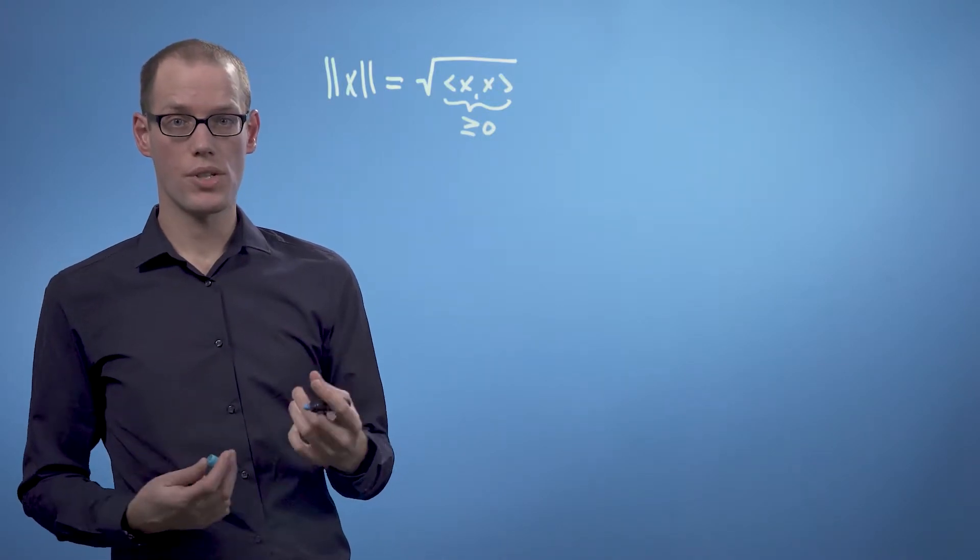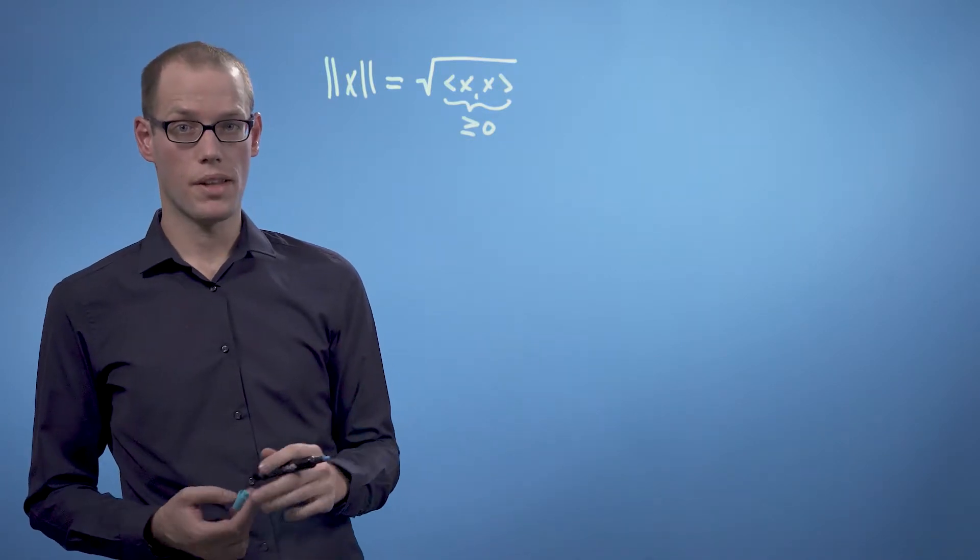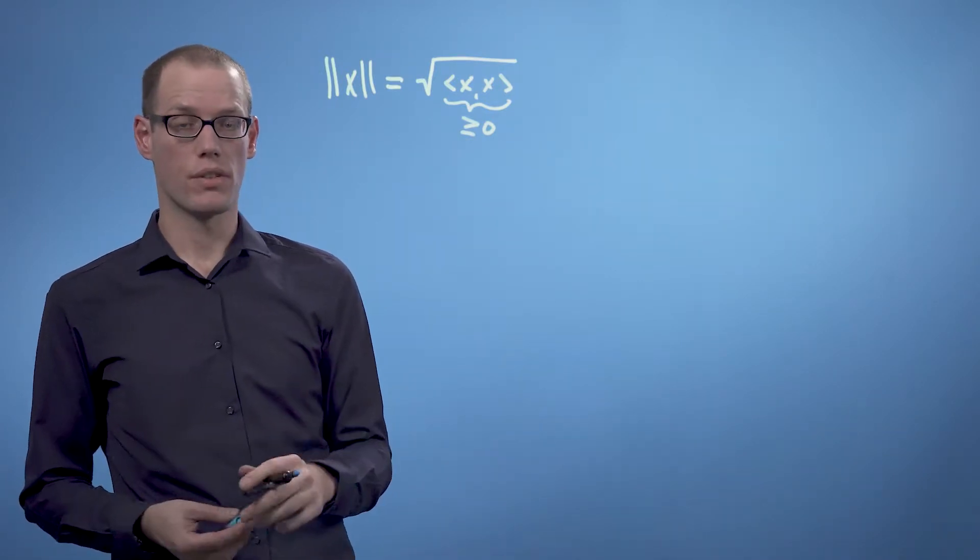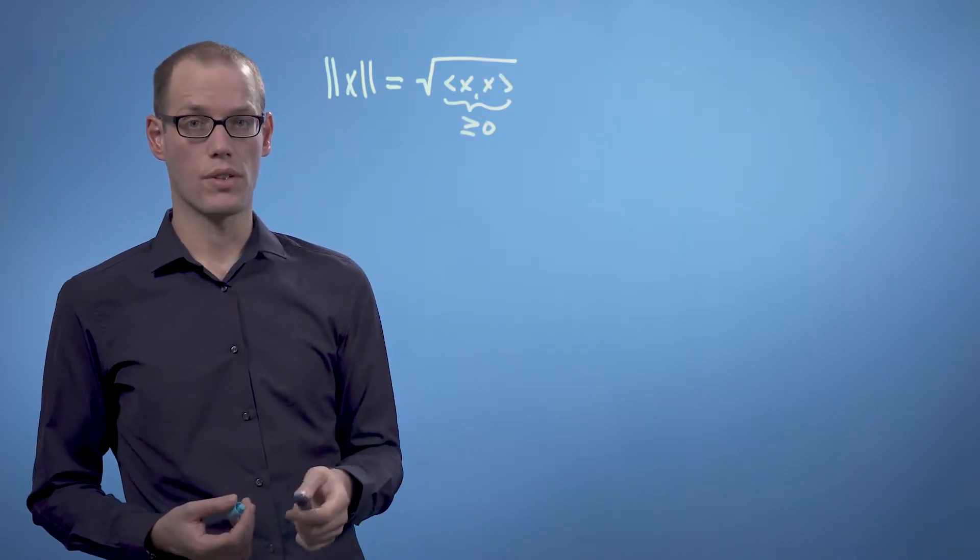We can now also see that the length of a vector depends on the inner product, and depending on the choice of the inner product, the length of a vector can be quite different. Similarly, the geometry in the vector space can be very different.